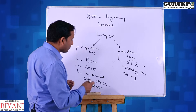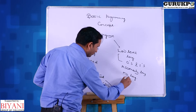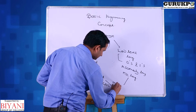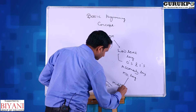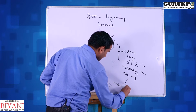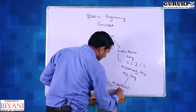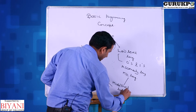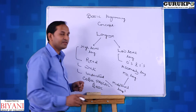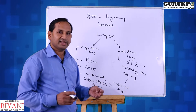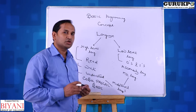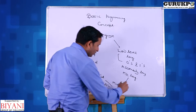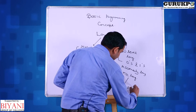So there is a third type of language called middle level language. Language which contains the best features of both high level as well as low level is called middle level language. A very popular example of middle level language is C.